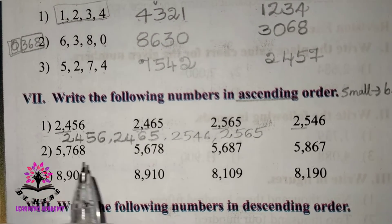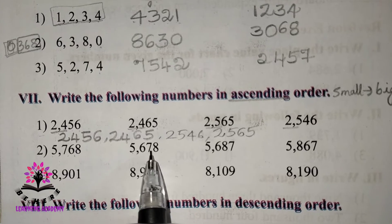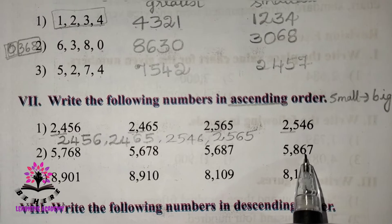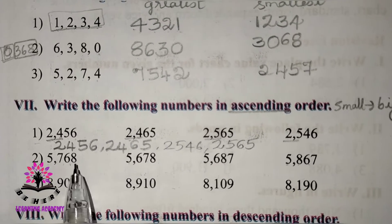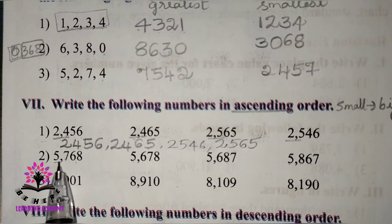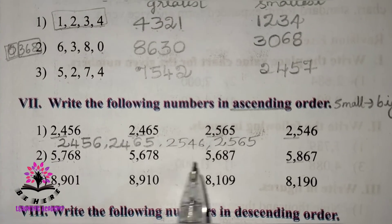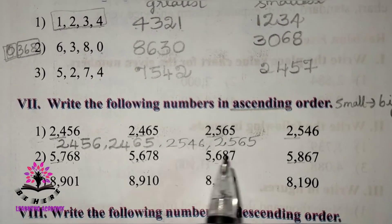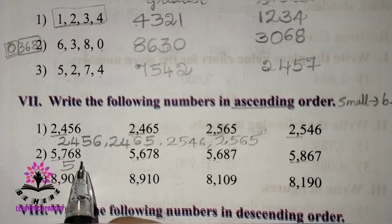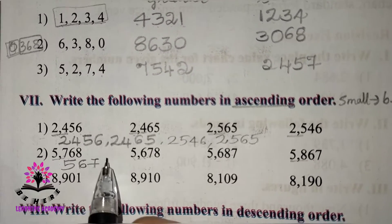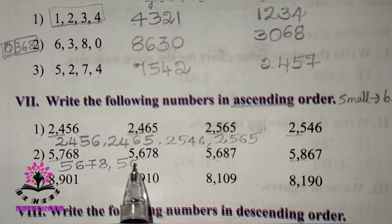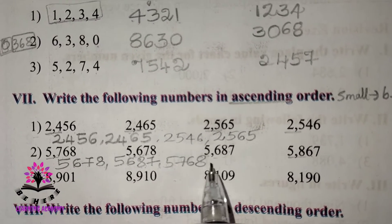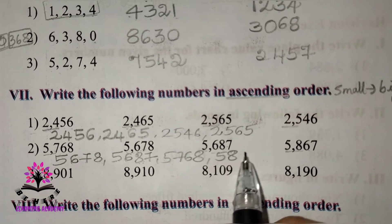Second set: 5768, 5678, 5687, 5867. Compare hundreds digits: 5678 and 5687 are in the 5600s, 5768 is in the 5700s, 5867 is in the 5800s. So ascending order is: 5678, 5687, 5768, 5867.